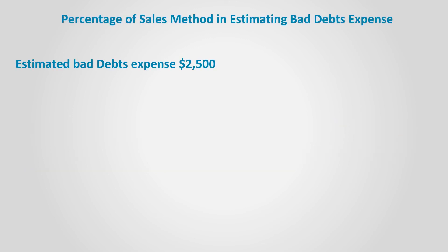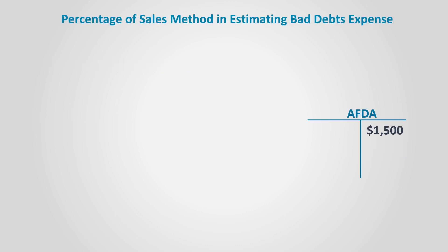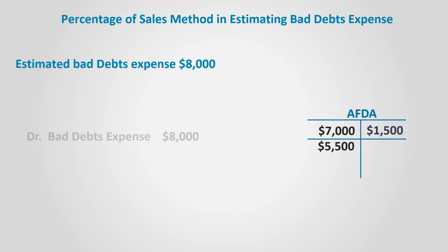Now assume the business is using the percentage of sales method to estimate bad debts expense, and the estimated bad debts expense is $2,500. The AFDA balance is $500 in credit. In such a case, we debit bad debts expense and credit the AFDA account for $2,500 regardless of the AFDA balance, because we are estimating the bad debts expense, not the AFDA balance. On the other hand, if the AFDA had a debit balance, the business should adjust its estimates and estimate a suitable bad debts expense to make the AFDA's balance credit again — as in the previous example when Customer Z defaulted for $7,000 and AFDA had a debit balance of $5,500. In that case, the business might estimate the bad debts expense to be $8,000.